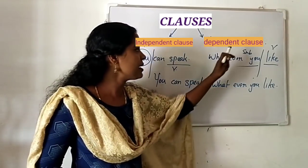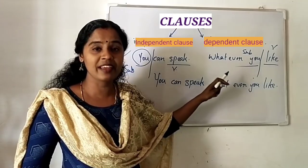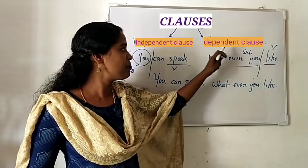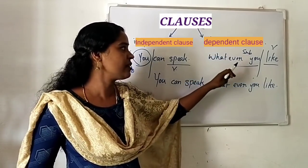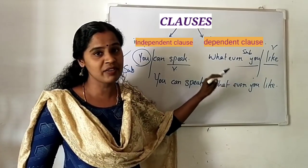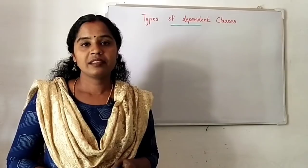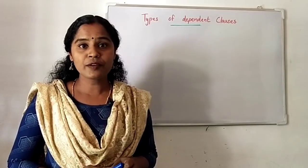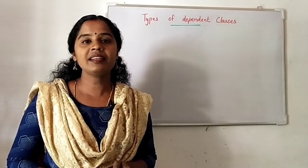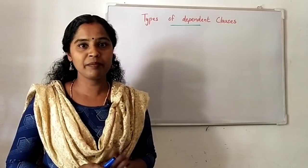In short, a dependent clause needs some other words, phrase, or clause to get a complete meaning. So, there are two divisions of clauses: independent and dependent. Independent clauses have complete meaning.